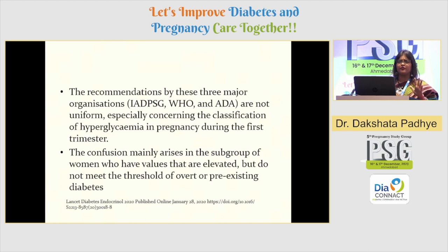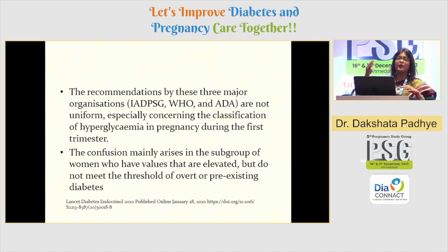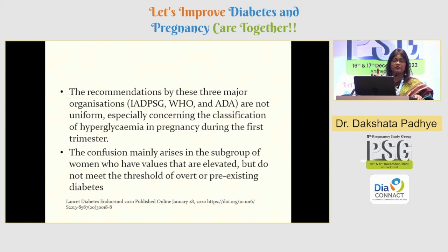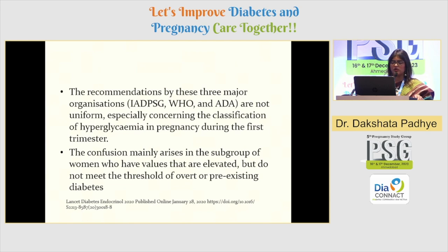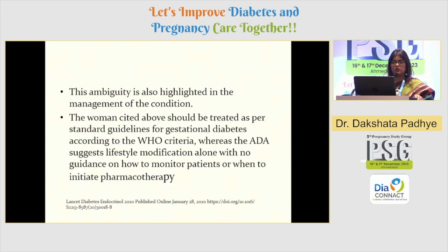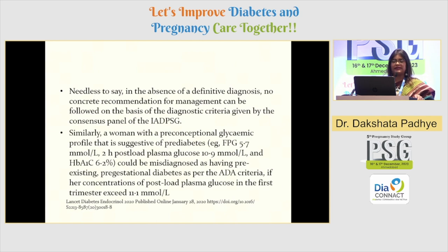For screening also, there is so much confusion — 15 grams, 75 grams, 100 grams, how many steps, one-step, two-step, or three-step procedure. We have to be very, very clear about it. This confusion mainly arises in subgroups of women who have values which are not very much elevated but do not meet the threshold for overt or pre-existing hyperglycemia — just a small cutoff above 140 post-glucose, or a little bit of rise in fasting sugar. There is confusion in classification. The absence of definitive diagnosis or concrete recommendation for management means we cannot rely on just diagnostic criteria alone.